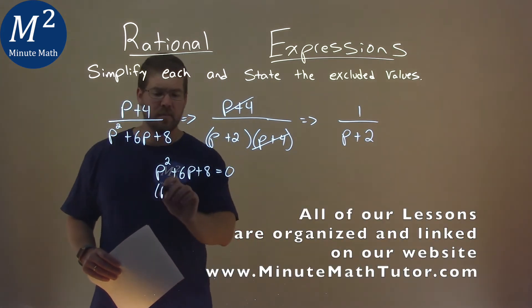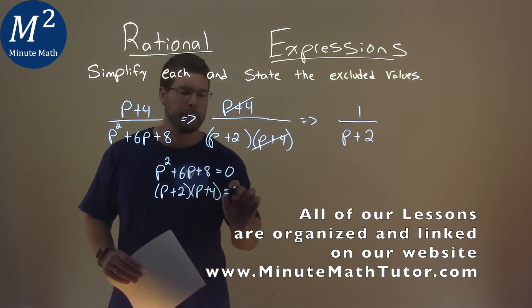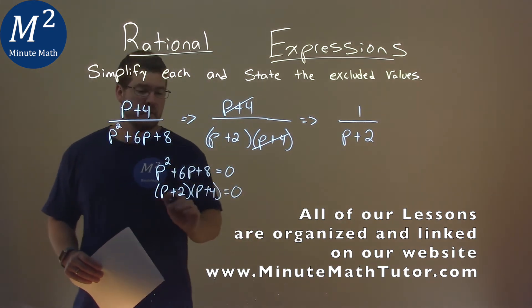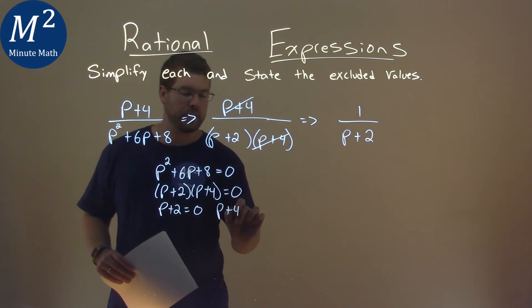Well, we've already factored that. That's a p plus 2 and a p plus 4. And then, from there, we can set each part individually equal to 0. A p plus 2 equals 0, and a p plus 4 equals 0.